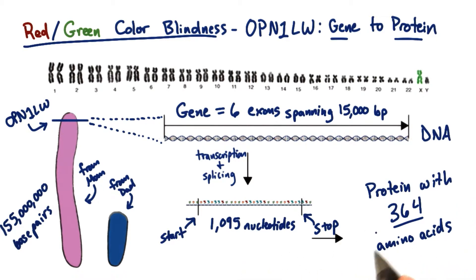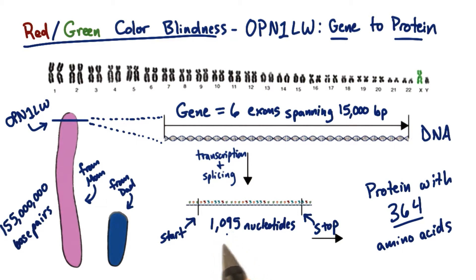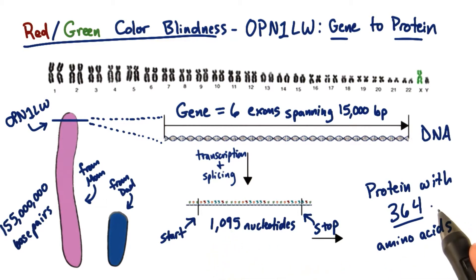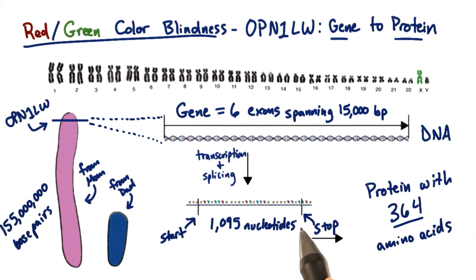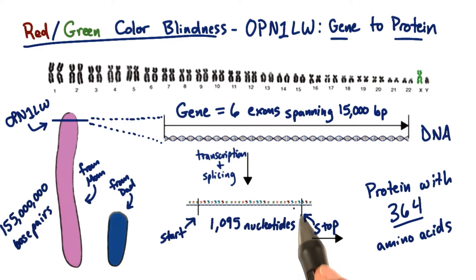Remember, this math is pretty easy. We just divide 1,095 by 3 to get 365, and then subtract 1 to get 364, because the stop codon doesn't code for an amino acid — it just means stop.